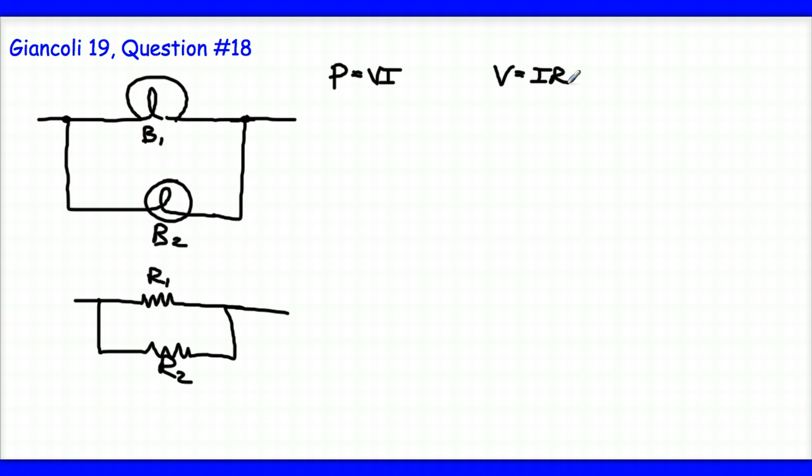I could substitute V over R as our current, and it's that substitution back into the power equation that yields this idea: power is equal to V times V over R, or V squared over R.